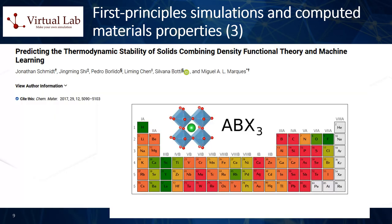Five: thermodynamic stability. The stability of a material under operating conditions is crucial for its durability and long-term performance. First principles calculations can be used to predict phase stability and degradation behaviors under different conditions. Six: effective mass. The effective mass of the charge carriers affects how they respond to an electric field. A lower effective mass typically corresponds to higher mobility, leading to better photovoltaic performance.